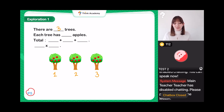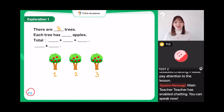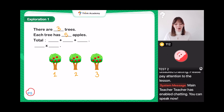Each tree has how many apples? Count carefully and then show me on your fingers or in the chat box — how many apples are on one tree? Excellent! Lots of us showing the right number of fingers and in the chat box too. There are five — five apples on each tree. Wonderful!